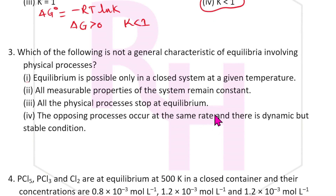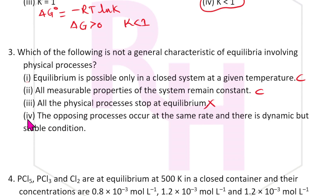Third question: which of the following is not a general characteristic of equilibrium? Equilibrium is possible only in a closed vessel — definitely correct. All measurable properties of the system remain constant — correct. All physical processes stop at equilibrium — wrong. For example, melting point and boiling point are physical processes that do not stop at equilibrium. Hence the answer should be the third option.